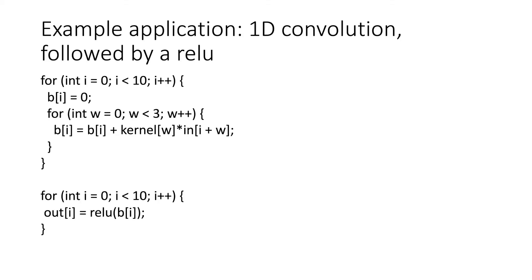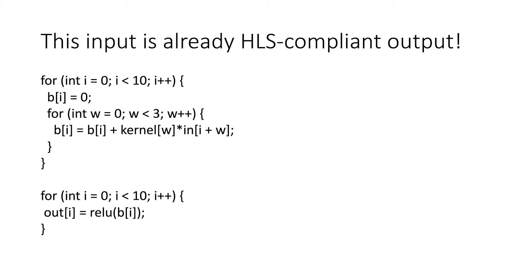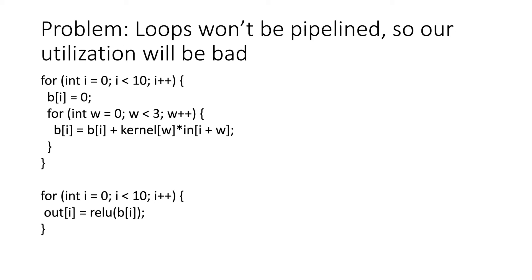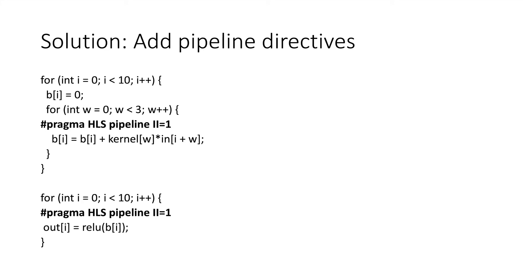For example, suppose we're doing a one-dimensional convolution on an input followed by a ReLU. In the first loop nest — for i in 1 to 10 — we initialize bi (the intermediate convolution result), do a three-by-one convolution to set bi, then output the ReLU applied to bi. This is HLS-compliant, but the loops won't be pipelined so utilization will be terrible. The easy fix is to add pipeline directives — like `#pragma HLS pipeline II=1` — to the inner loops to improve utilization.